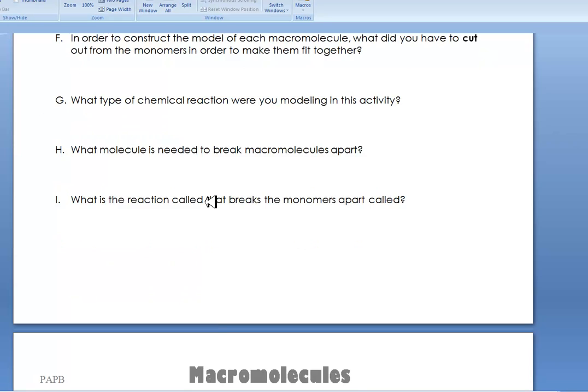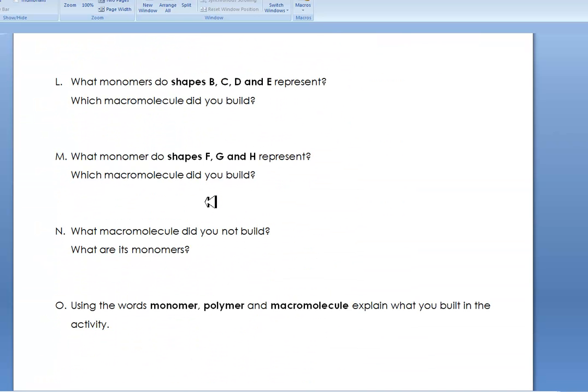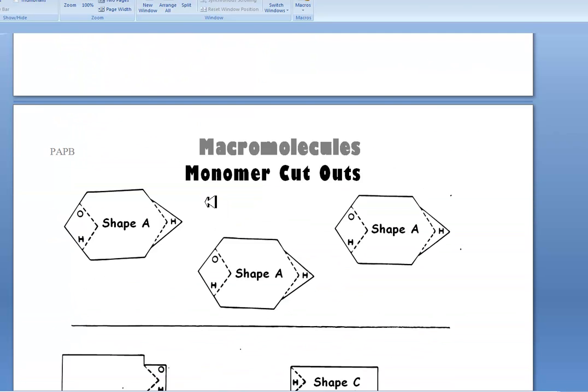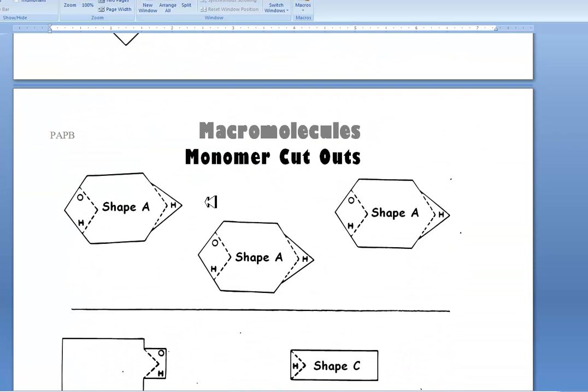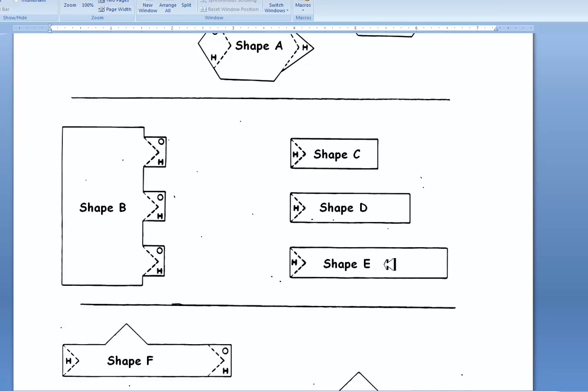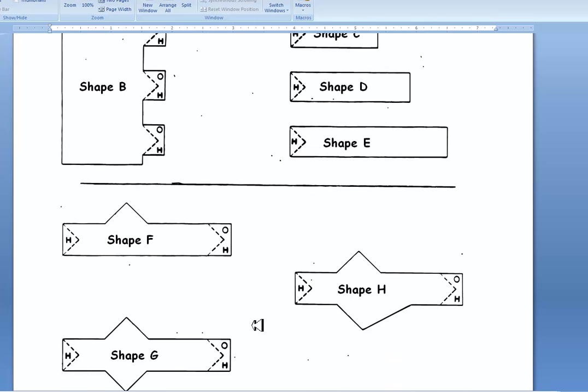And then you have conclusion questions, and you can see they go on for a whole page. I'd like you to answer those. Here's the cutout sheet, and you actually have two of them. So you'll have six A's rather than just the three A's. You'll have two B's, two C's, two D's, two E's, two F's, two G's, and two H's that you need to cut out.